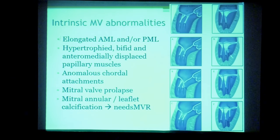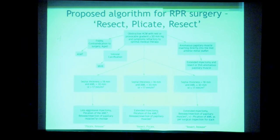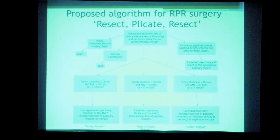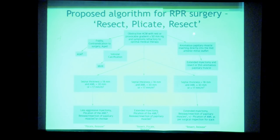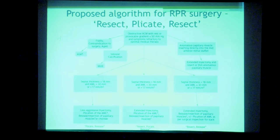Various mitral valve abnormalities guide surgical planning. Normally, resection of the septum is recommended. However, if the mitral valve is elongated or there are abnormal papillary muscles, the mitral valve must also be addressed. This is called RPR surgery: Resect the septum, Plicate the anterior mitral leaflet, and Release the anterior papillary muscle.